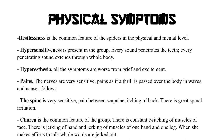Chorea is a common feature of this group — there is constant twitching of the muscles of the face, jerking of the hand and muscles of one hand and one leg. When she makes an effort to talk, whole words are jerked out — muscles में twitching होने की वजह से stammering जैसी condition produce हो जाती है।